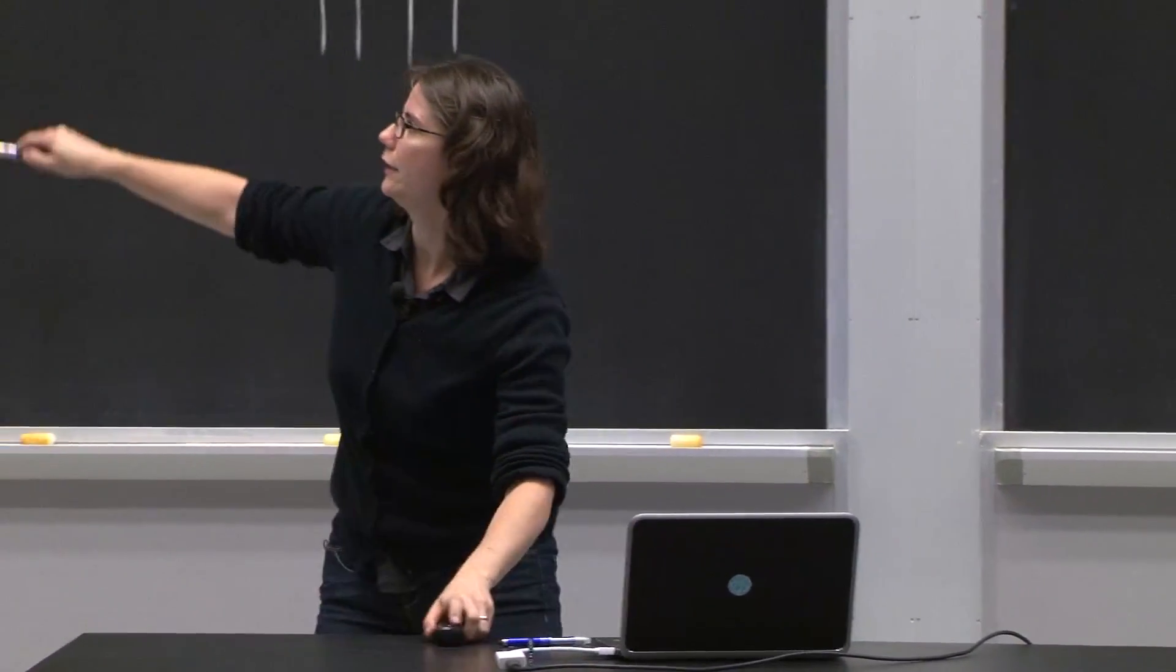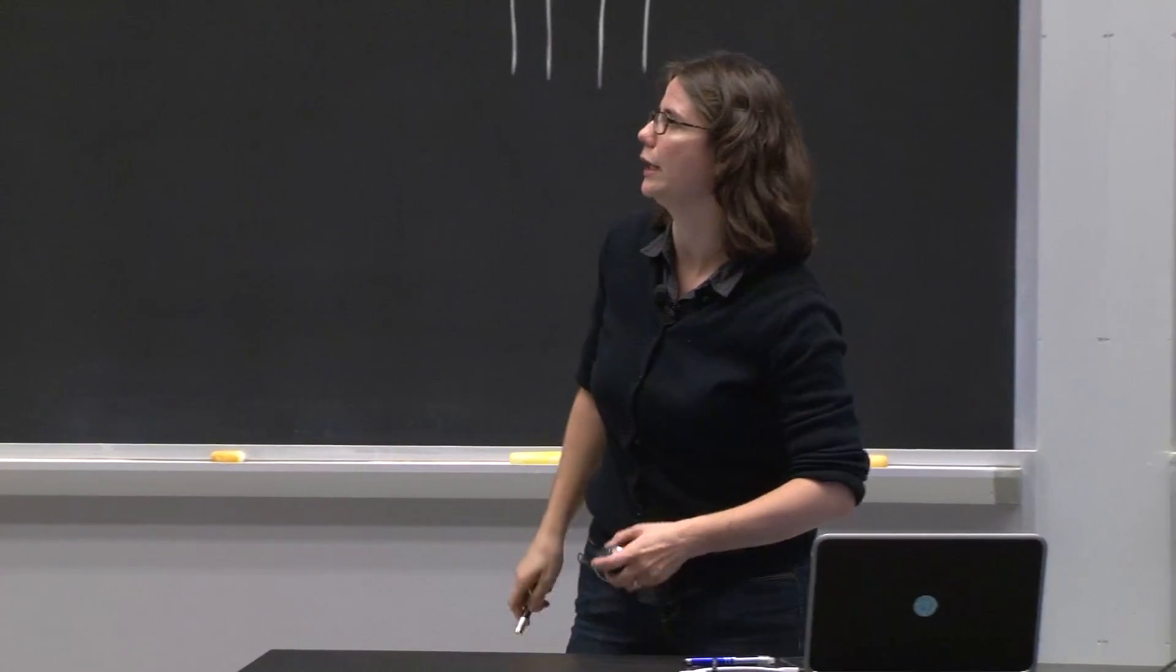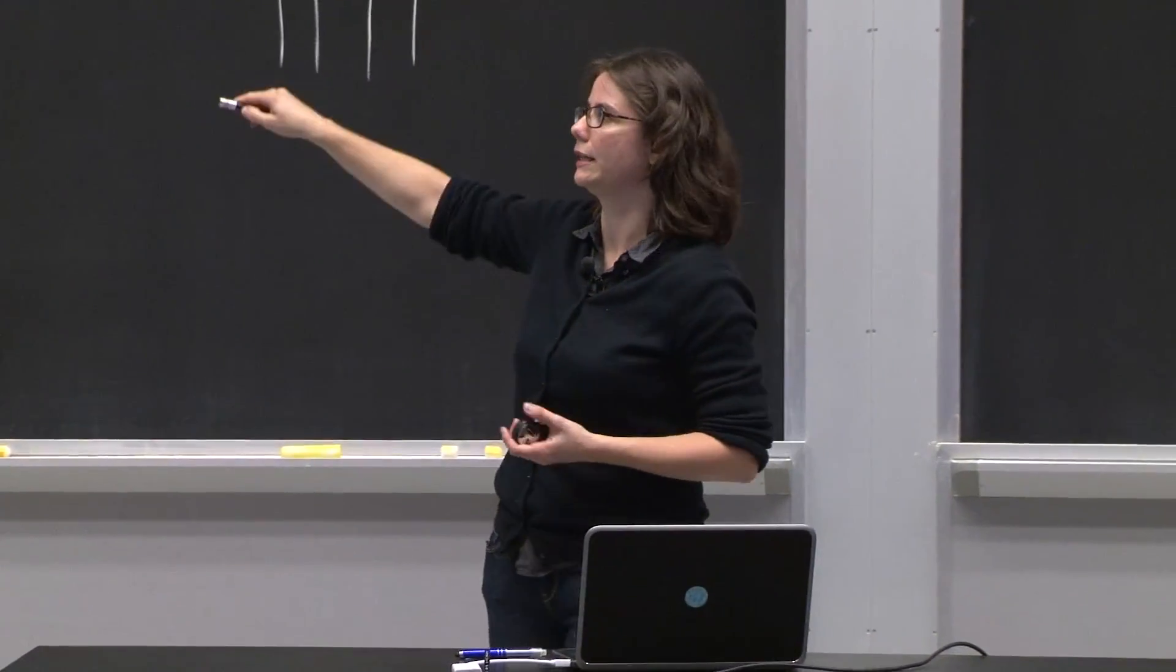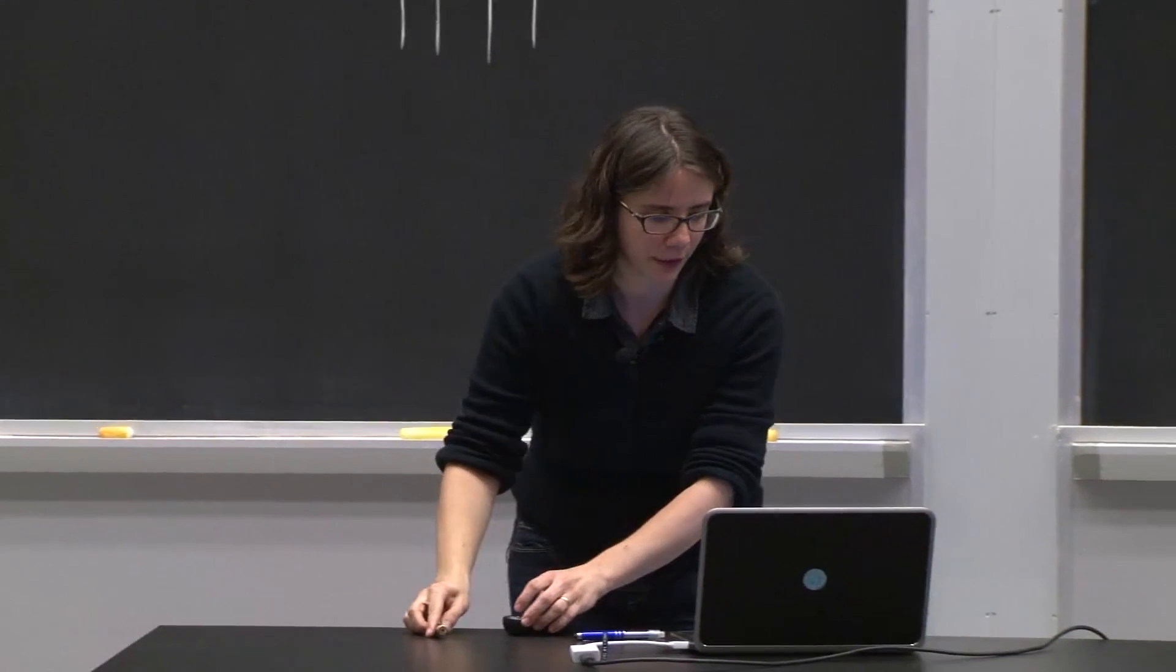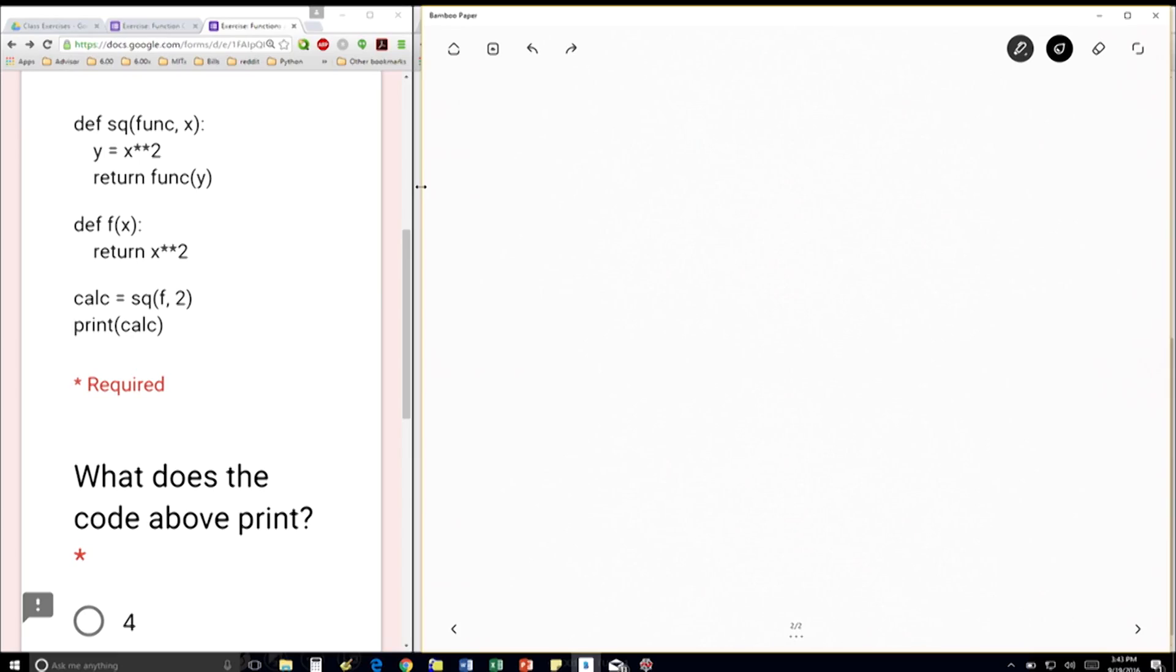So the first things we see here is two function definitions. So we don't currently care about what's inside them right now, because we haven't made a function call yet. So the first thing we do is we have the function call calc equal sq, f, and 2.